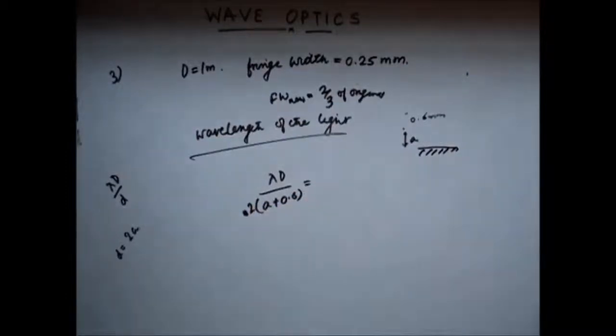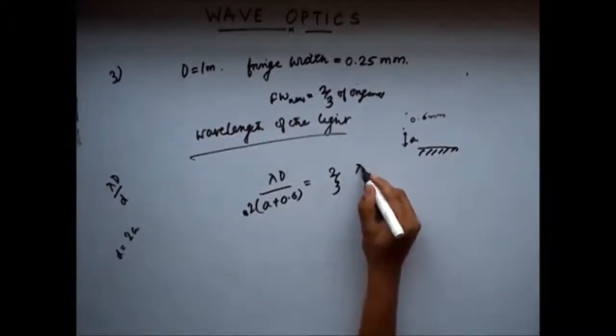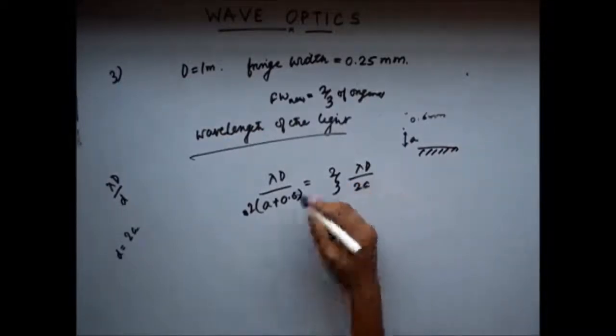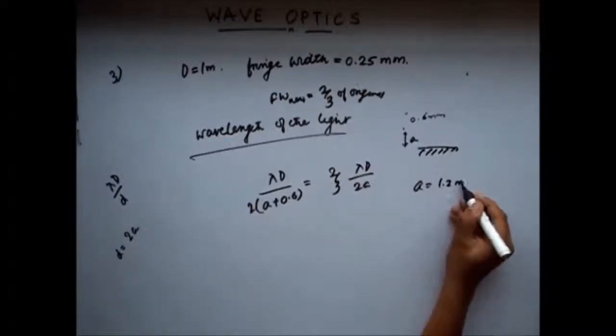This is, it says, is two-third of the original distance. From this, if you solve this, you will get a as 1.2 mm.